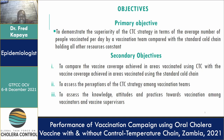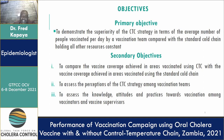Among the secondary objectives, some — including costing — will be presented by colleagues at a later stage. We concentrated on comparing the vaccine coverage achieved in areas vaccinated using the CTC versus the standard cold chain. We also assessed the perceptions of the CTC strategy among vaccination teams, and the knowledge, attitudes, and practices towards vaccination among vaccinators and vaccine supervisors.